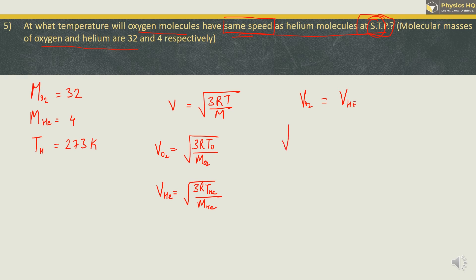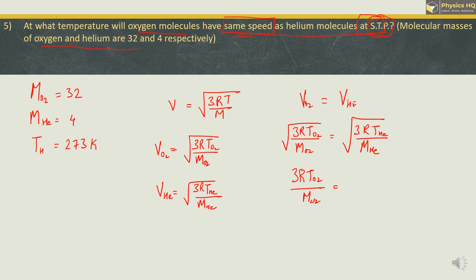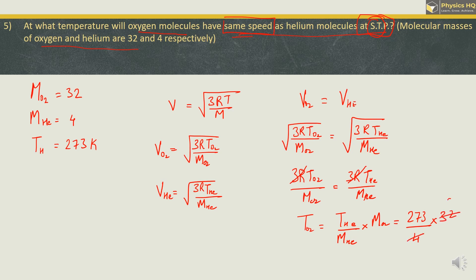Squaring both sides: 3R·T_O₂/M_O₂ = 3R·T_He/M_He. Cancelling 3R from both sides: T_O₂ = T_He × (M_O₂/M_He) = 273 × (32/4) = 273 × 8 = 2184 Kelvin. So the temperature for oxygen molecules to have the same speed as helium at STP is 2184 Kelvin.